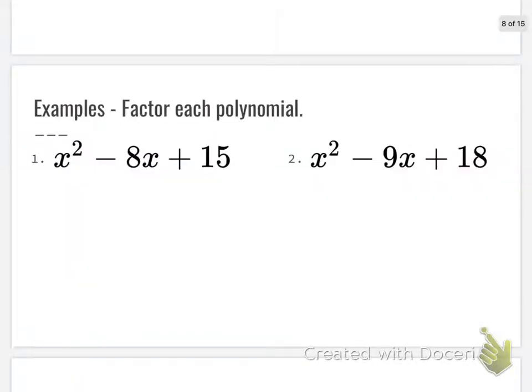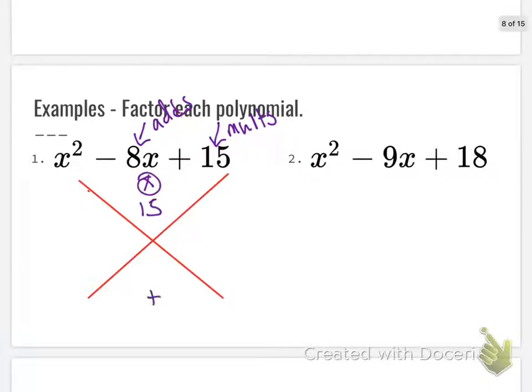Okay, so here we're doing that magic X again. I'm going to start. It's still the same scenario. Multiplies to give me 15, adds to give me negative 8. So we're looking for multiplying to 15, adding to negative 8. We know that what it's multiplying to is a positive number, right? And we know what it's adding to is negative. So you guys can rule out all of the positive versions.